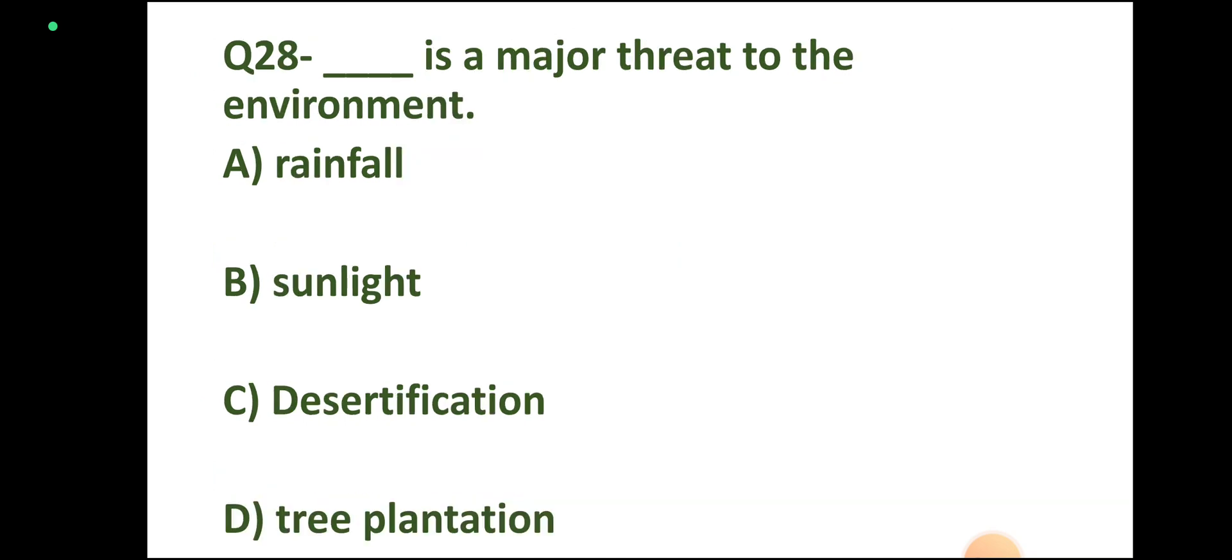Question number 28: Which is a major threat to the environment? Options: rainfall, sunlight, desertification, tree plantation. Correct answer: desertification.